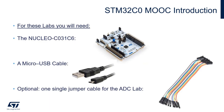In terms of hardware, here is what you need. First, a Nucleo board C031C6 — this is the one right here — with the ST-Link and the microcontroller, the STM32C0, right here. Then you will need a micro USB cable to connect your ST-Link, your board, to your host machine. And then, optionally, you can use a single jumper, which could be useful for one of the labs — one of the exercises we will do with ADC.